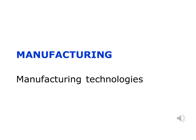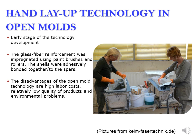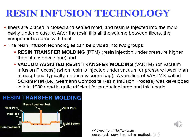Let us look at manufacturing technologies of wind blade composites. Initially, the production of wind blades was often initiated by yacht and boat building companies using their experience with boat building. At that time, blades were often produced using the wet hand layup technology in open molds — fibers were impregnated using paintbrushes and rollers, and shells were adhesively bonded together or to the spars. This technology was used mainly to produce small and medium-sized blades. For larger blades, webs were inserted and adhesively bonded between two sides, and plies with higher fiber content were used. Disadvantages of the open mold technology include high labor costs, relatively low quality of products, and environmental problems.